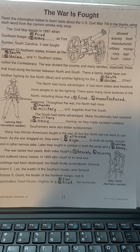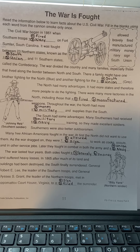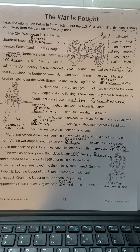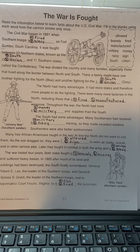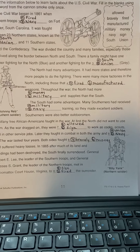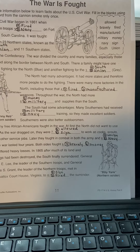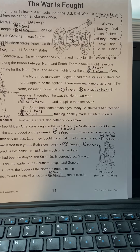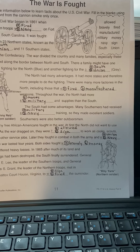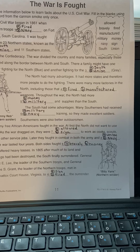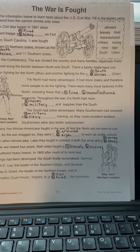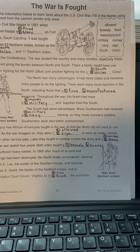The war divided the country and many families, especially those that lived along the border between north and south. A family might have one brother fighting for the north in blue and another fighting for the south in gray. The north had many advantages. It had more states and therefore more people to do the fighting. There were many more factories in the north, including those that manufactured weapons. Throughout the war, the north had more money and supplies than the south.